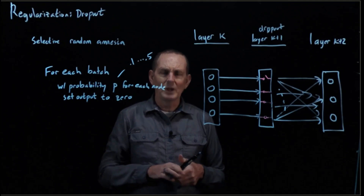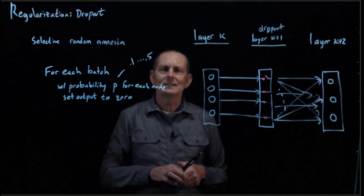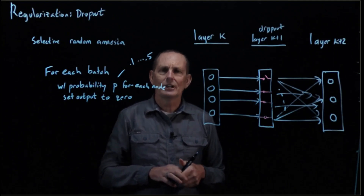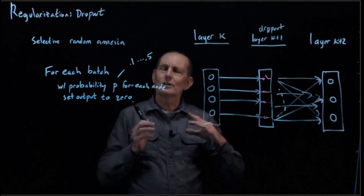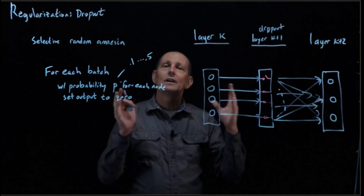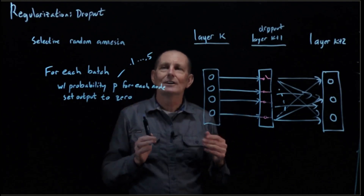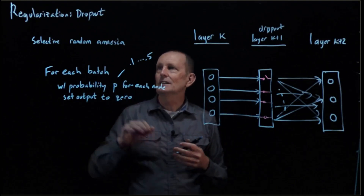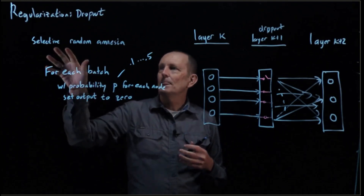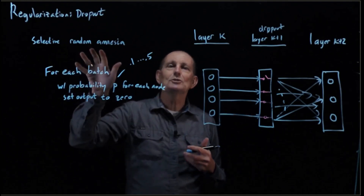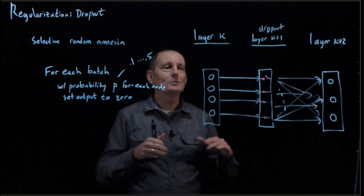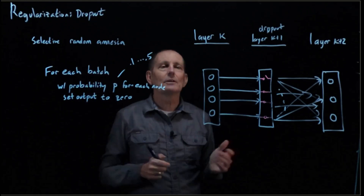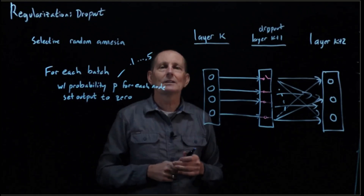We get these different trained networks, and we can treat it as if we have an ensemble of all of these slightly reduced-power networks. Then we put them all together in one big network at the end.